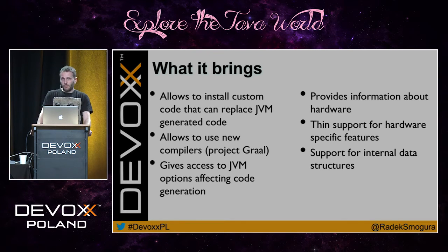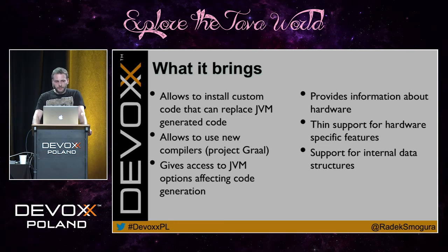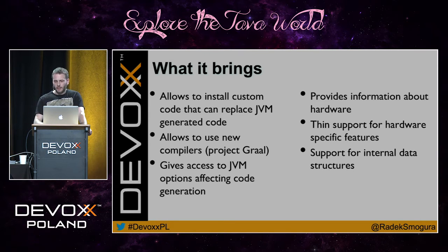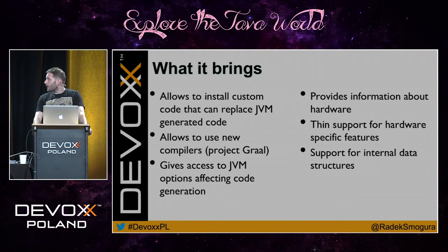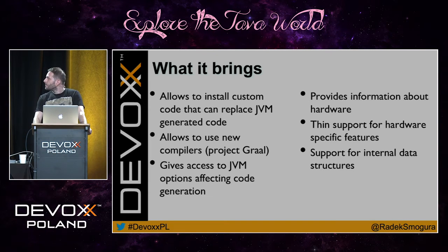What can you get from this compiler interface? You can install custom code and replace machine-generated code. For example, if you think you can do better than what C1 or C2 have created, you can replace it with your own machine code. You can use alternative compilers like Project Graal, which is available in an experimental phase.